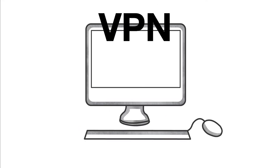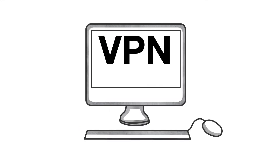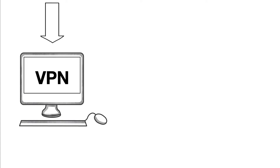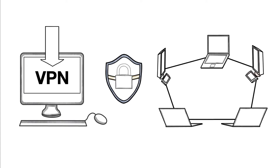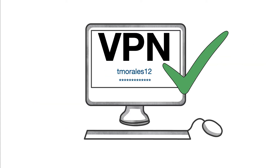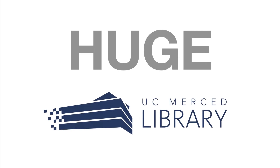Instead, install the VPN on your computer. After the initial install, connect to the VPN with your UCM NetID and password. When you connect to the VPN, you are establishing a secure connection between your computer and the UC Merced network.